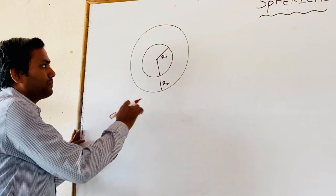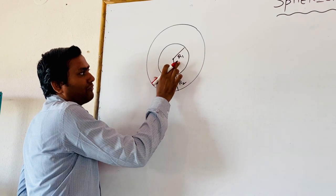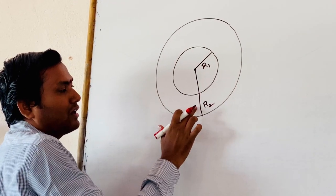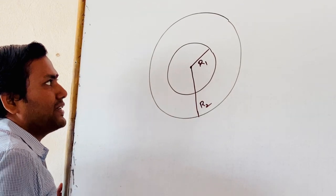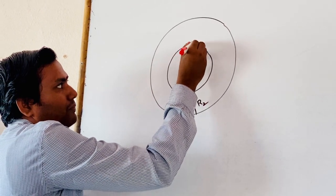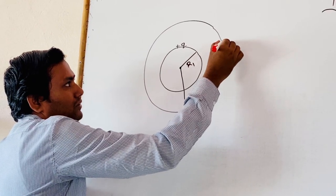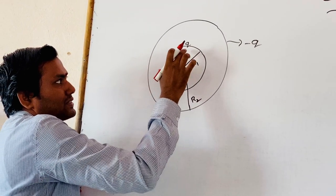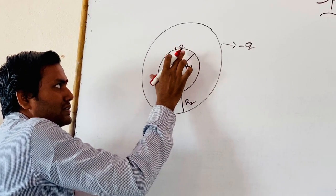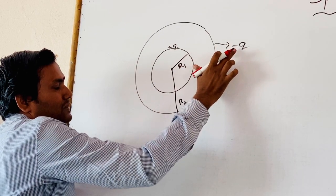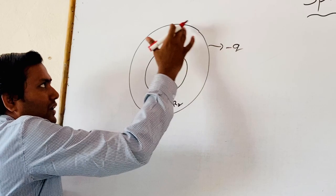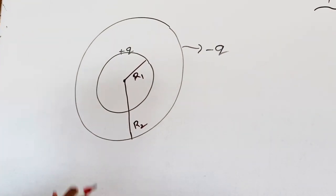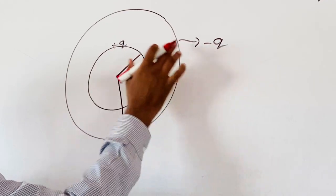Here we are seeing our Spherical Capacitor. This Spherical Capacitor has two plates. One is the inner sphere having radius R1, and the outer sphere having radius R2. Now, we are giving charge plus Q to the inner sphere and minus Q to the outer sphere. The charge plus Q entirely lies on the outer surface of the inner sphere, and the charge minus Q entirely lies on the inner surface of the outer sphere.